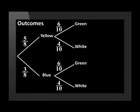Now let's use the diagram to find the probability of picking a yellow and then a green ball. We multiply the probability of getting yellow and the probability of getting green. 5 over 8 multiplied by 6 over 10 equals 30 over 80. This simplifies to 3 over 8.